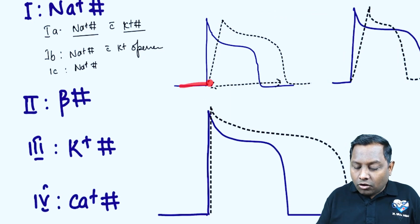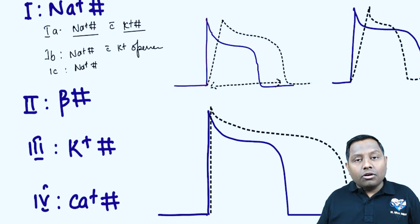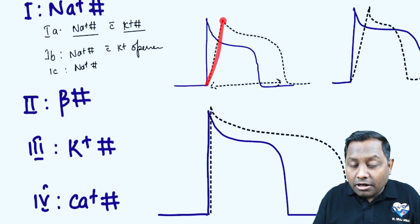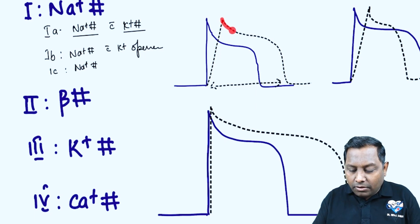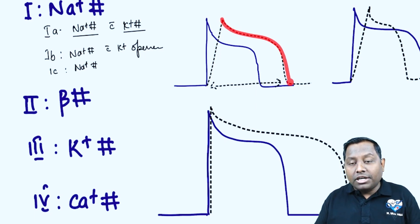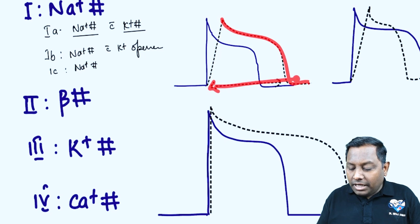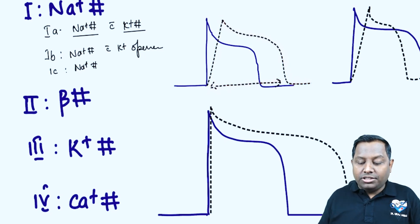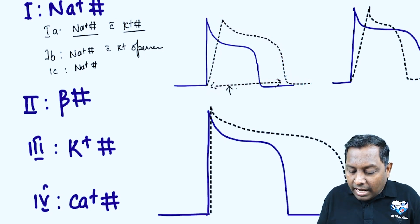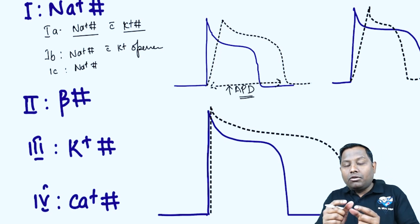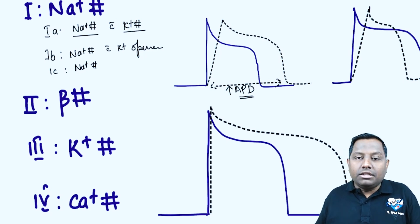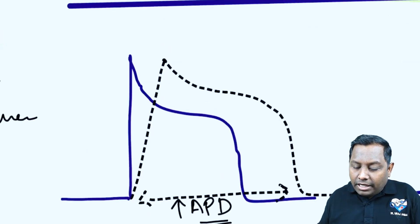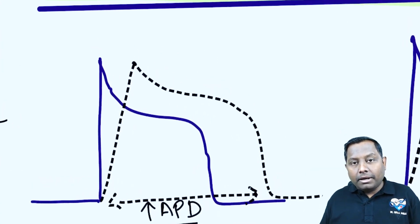Looking at the graph: the normal action potential duration is shown as the baseline. When you block the sodium channel there is a decrease in the slope of depolarization. Additionally, due to potassium channel blockade, repolarization is also slowed. Overall there is an increase in action potential duration, which corresponds to QT interval prolongation on ECG.